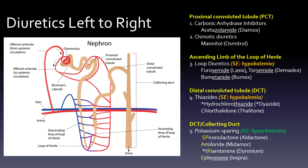Then we move to the Midwest, which is the ascending loop of Henle, also called the ascending limb of the loop of Henle. These are our loop diuretics. The big issue here is hypokalemia. This group includes furosemide (Lasix), torsemide (Demadex), and bumetanide (Bumex).